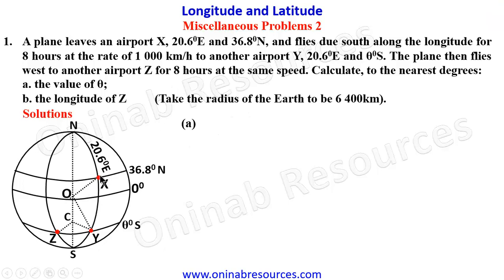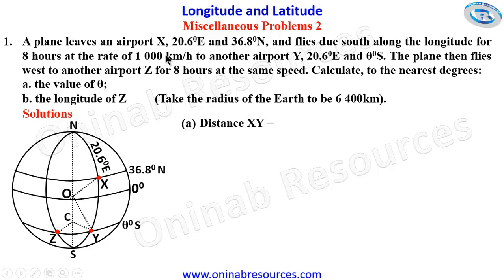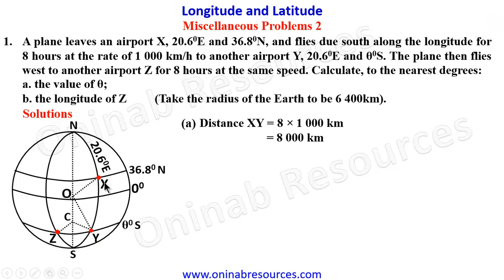For part (a), to calculate the value of theta, we first need the distance between X and Y. Since the plane flies for eight hours at a speed of 1,000 kilometers per hour, distance equals time multiplied by speed, giving 8 × 1,000 = 8,000 kilometers. The distance is along a great circle (longitude), and we need to find the angular distance alpha between X and Y using the formula: alpha/360 × 2πR = distance.